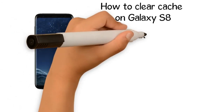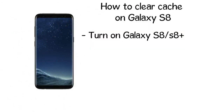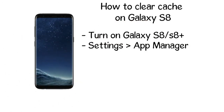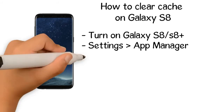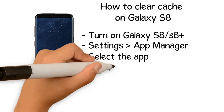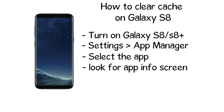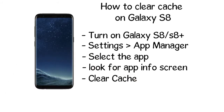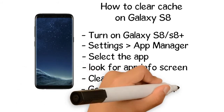Step 1: Turn on your Galaxy S8 or Galaxy S8 Plus. Step 2: Go to Settings, App Manager. Step 3: Select the app you want to clear the cache for. Step 4: After you've selected the app, look for the app info screen. Step 5: Select clear cache.